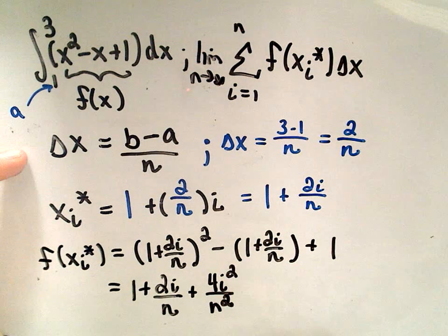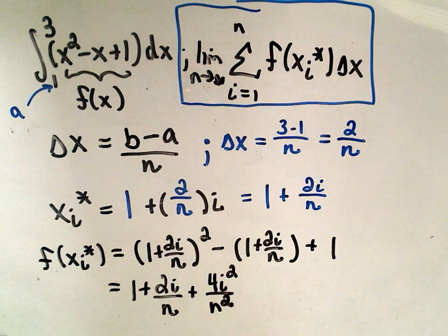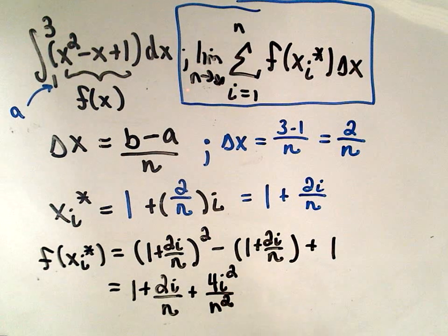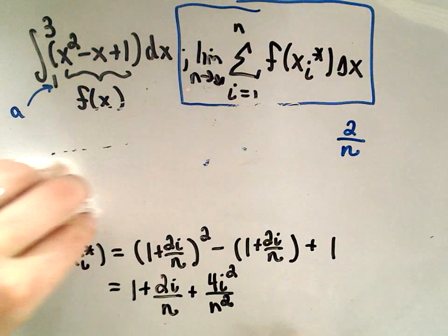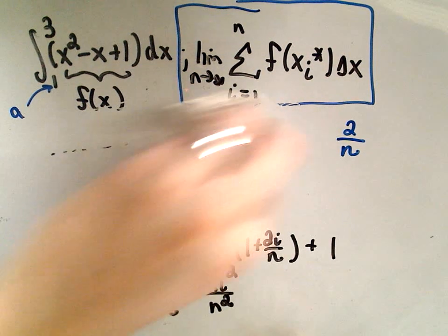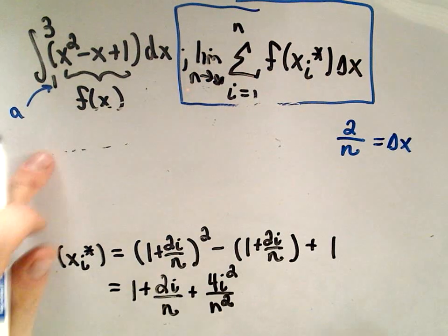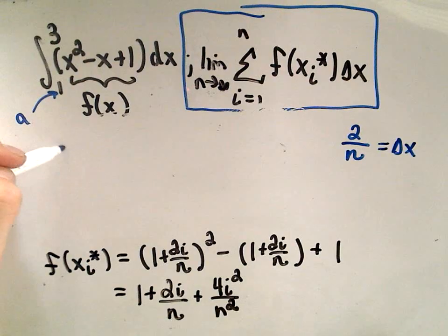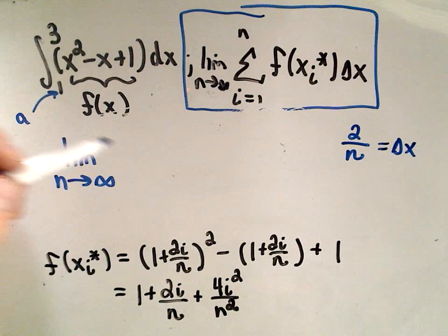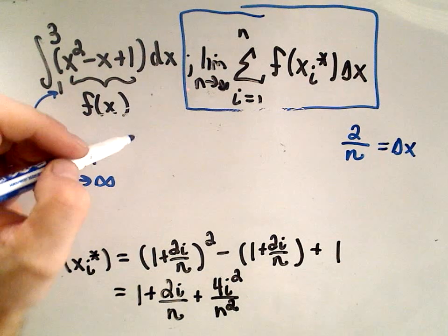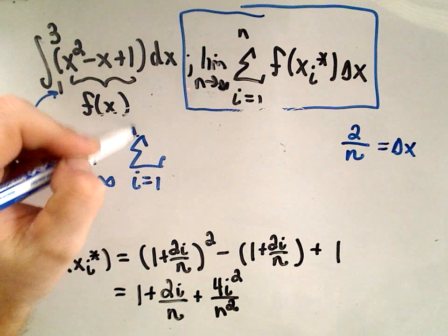Now if we plug it into the definition to calculate this thing, let's plug all of this in. We know what our delta x is, that's 2 over n. We've calculated our f of x sub i. When we plug it all in, we're going to have the limit as n goes to infinity. And when we plug in our f of x sub i, let's not leave out our summation, i equals 1 to n.